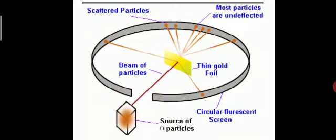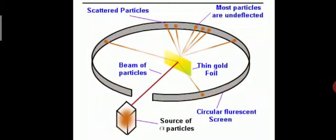He took a thin gold foil — gold is highly malleable, meaning you can make it into very thin sheets. The thickness of the gold foil was one atom. He surrounded this thin gold foil with a circular fluorescent screen made of zinc sulfide to detect the alpha rays coming from the alpha source, since we cannot see the rays with our naked eyes.